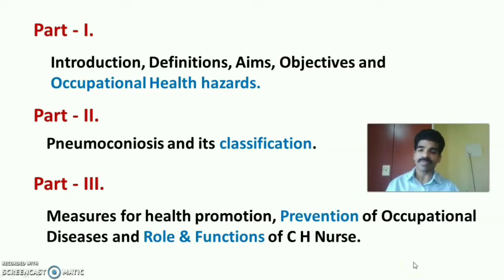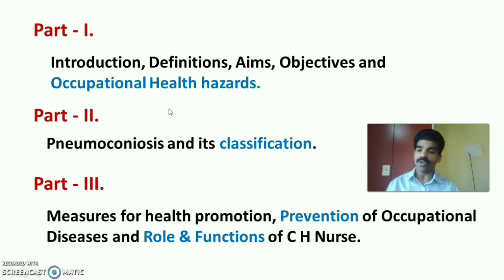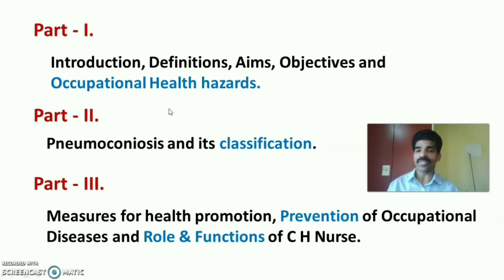This video is divided into three parts. Part 1 covers introduction, definitions, aims, objectives, and occupational health hazards — occupational health hazards may be asked as a short note. Part 2 covers pneumoconiosis and its classification. Part 3 covers health promotion measures, prevention of occupational diseases — medical, engineering, and legislative measures — and the role and functions of the community health nurse in occupational nursing.